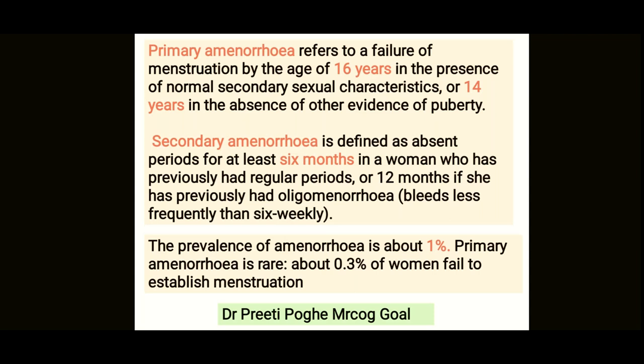Secondary amenorrhea is defined as absent periods for at least six months in a woman who has previously had regular periods, or 12 months if she has had oligomenorrhea — that is, periods less frequently than every six weeks. So six months for regular periods without menstruation qualifies as secondary amenorrhea.